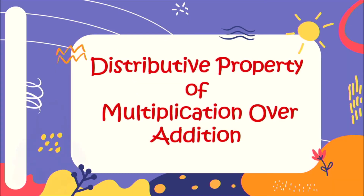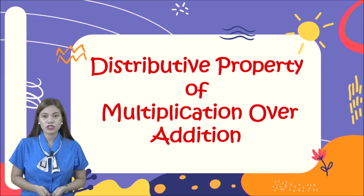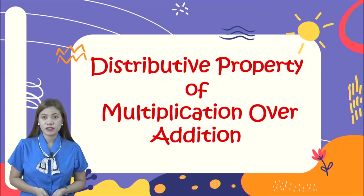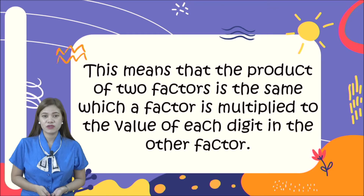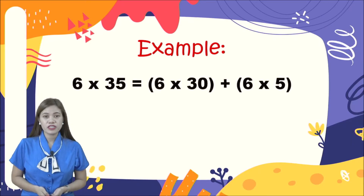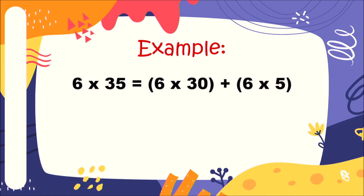The last property is distributive property of multiplication over addition. This means that the product of two factors is the same when a factor is multiplied by the value of each digit in the other factor. Let's look at the example. First we have six times 35. The first thing to do is to distribute, then use the expanded form to separate 35. The expanded form of 35 is 30 plus 5, giving us: six times 30 plus six times 5.